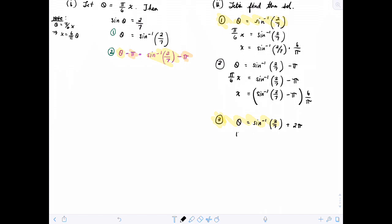if theta would equal inverse sine of 2 sevenths plus 1 revolution over plus 2 pi, right? Make it go around once. But theta is equal to, again, pi over 6x, which is inverse sine of 2 sevenths plus 2 pi, which means x is going to equal the inverse sine of 2 sevenths plus 2 pi times 6 over pi. Okay.